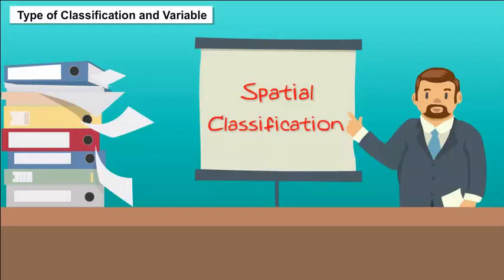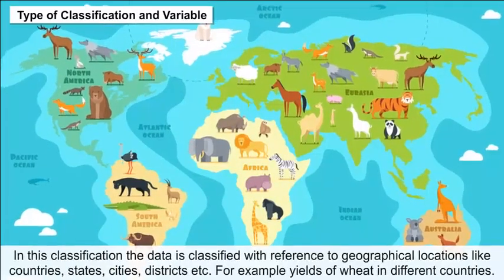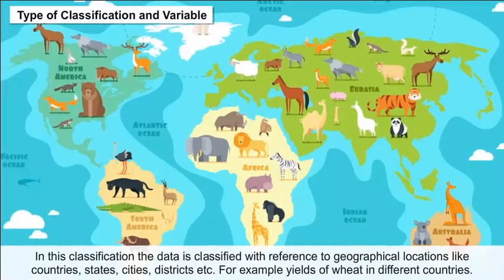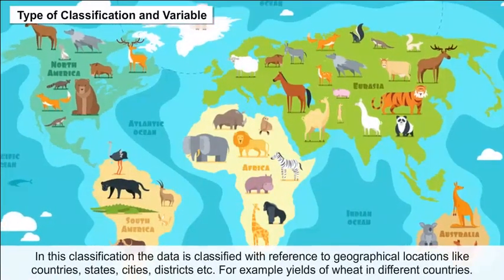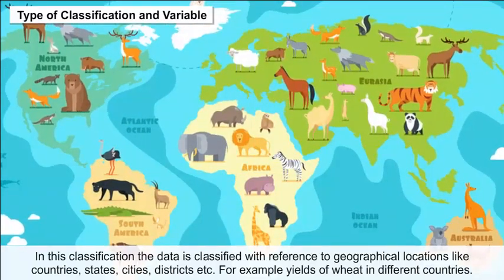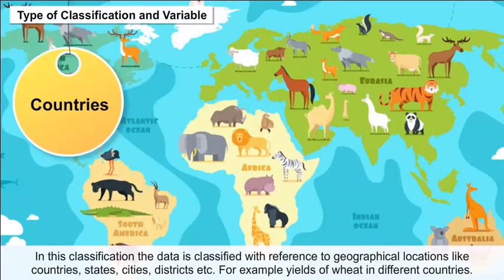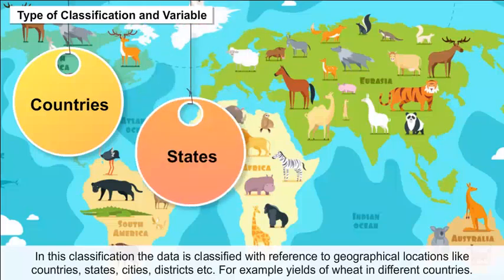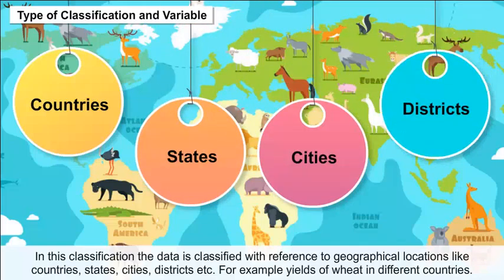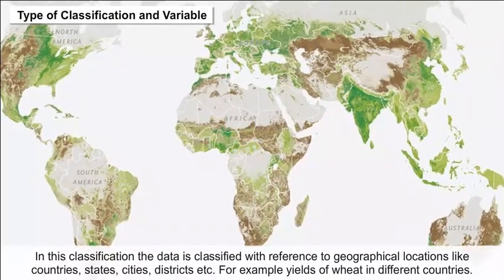Spatial classification: In this classification, the data is classified with reference to geographical locations like countries, states, cities, districts, etc. For example, yields of wheat in different countries.